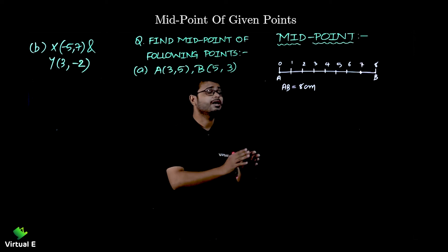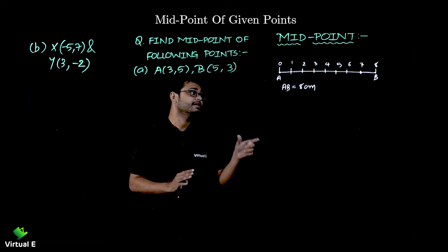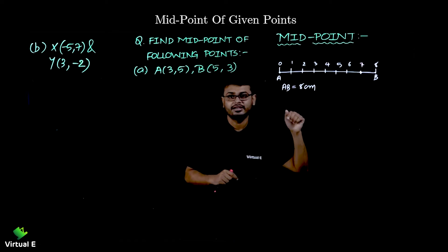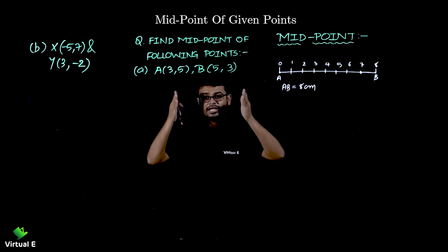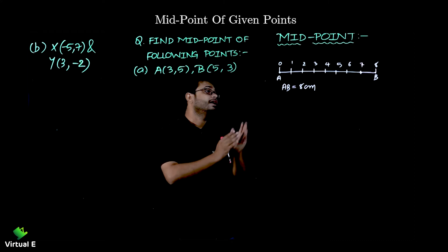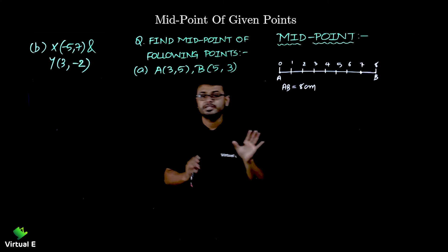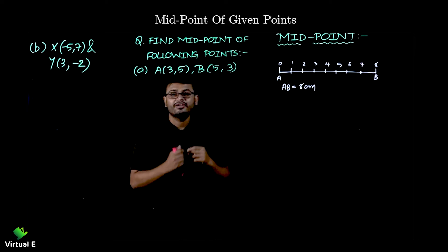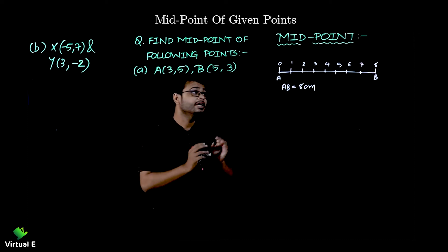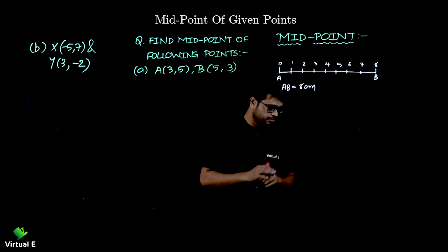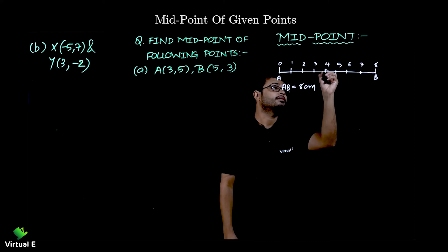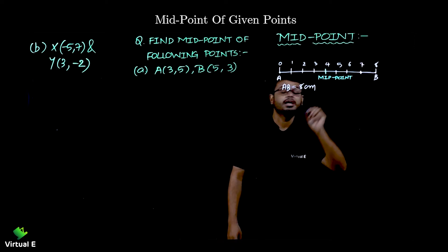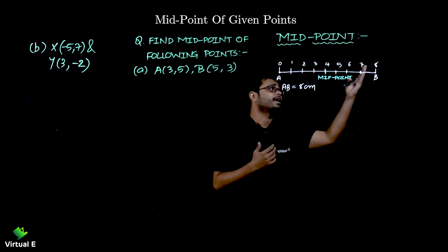Let's start with the number line — the most simple case. I've taken a line segment of eight centimeters. The arrows are not there on both sides, so it is a line segment — just a part of a longer number line. I want to find the midpoint of it. You can easily say it is at four, but we need to understand what we are doing at that time.